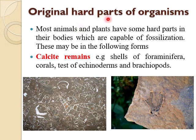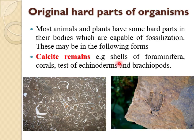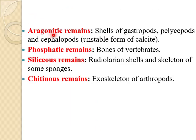Now we are going towards the original hard parts of organisms. Most animals and plants have hard parts in their bodies which are capable of fossilization. There are the following different forms of original hard parts in fossilized form. Number one is calcite remains. The shells of foraminifera, corals, and tests of echinoderms and brachiopods are basically preserved as calcite remains in the ancient time. Here in these two diagrams you can easily observe these remains in the form of calcite.